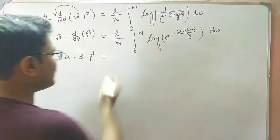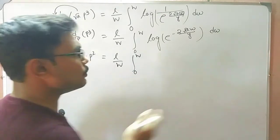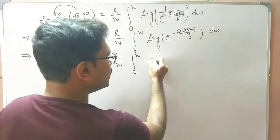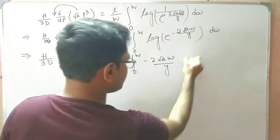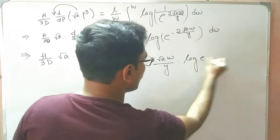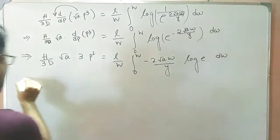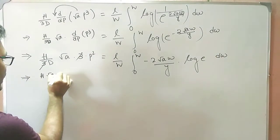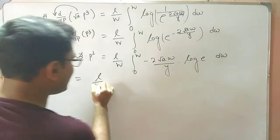And this one L/W integral 0 to W, you know whenever this is in a power, this comes in front of the log. So it will be 2√a*w/y * log(e) * dw.